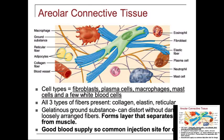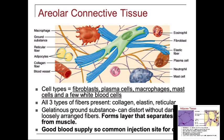Areolar has different cell types: fibroblasts, plasma cells, macrophages, mast cells, and white blood cells. It has all different types of fibers — collagen, elastin, and reticular fibers. This is very important connective tissue because it separates the skin from the muscle. If you take your forearm and pinch it, you're pinching skin and feeling it separate from the muscle beneath. That area has a very good blood supply and is a common site for injections.